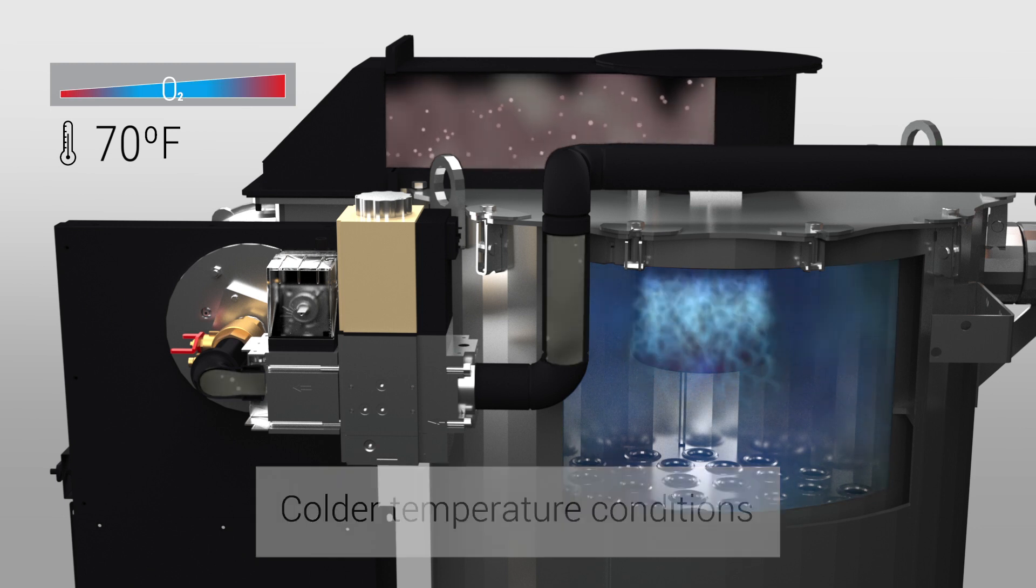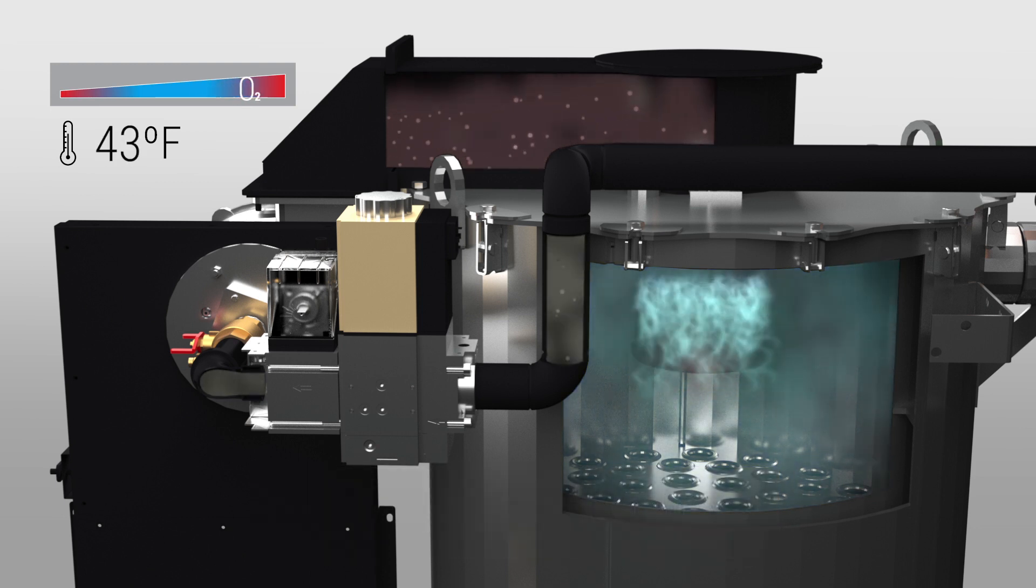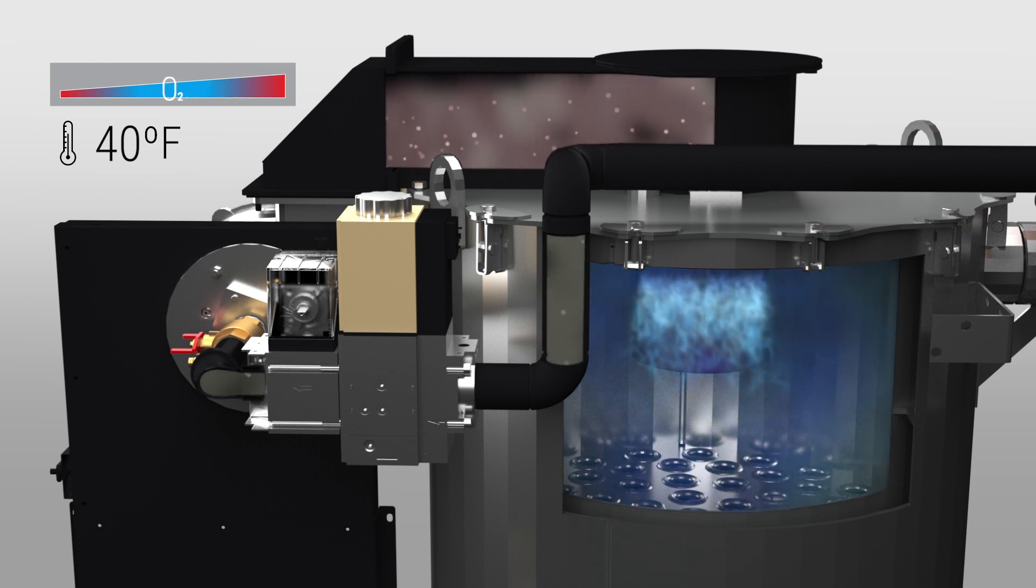As ambient temperature drops, the air will become more dense, increasing the oxygen measurements in the flue gas. The hot system adjusts the gas flow to the best fuel air ratio.